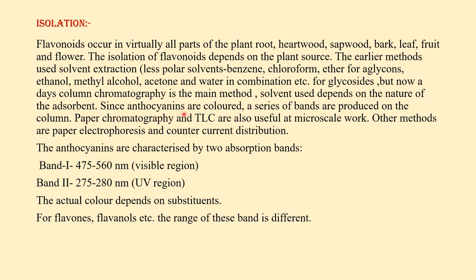Since anthocyanins are colored, a series of bands are produced on the column. Paper chromatography and thin-layer chromatography are also useful at microscale level. Other methods are paper electrophoresis and counter-current distribution. Anthocyanins are characterized by two absorption bands: band 1 at 475 to 560 nm (visible region) and band 2 at 275 to 280 nm (ultraviolet region). The actual color depends on substituents; for flavones and flavonols, the range of these bands is different.